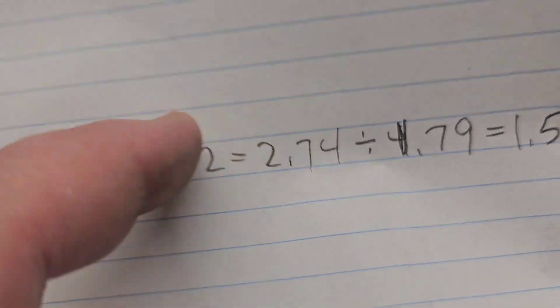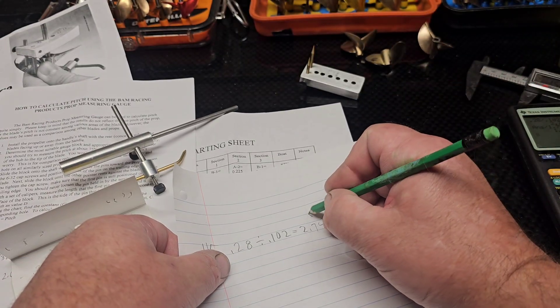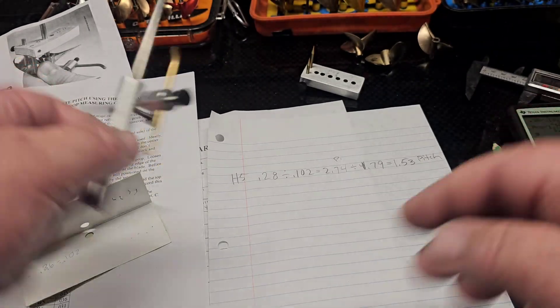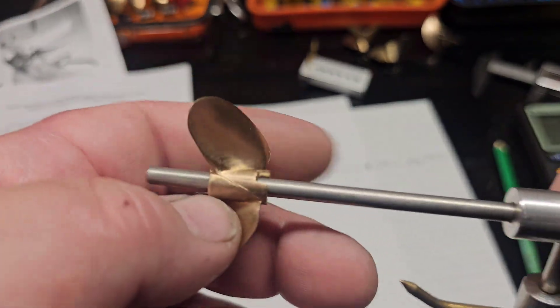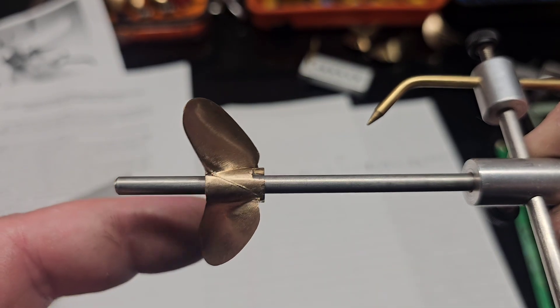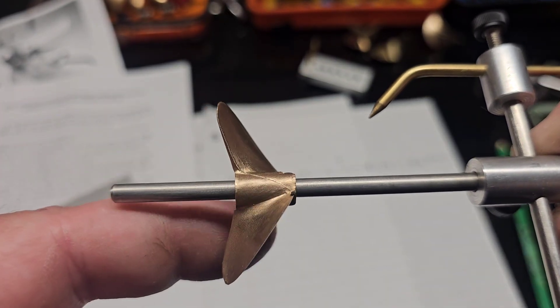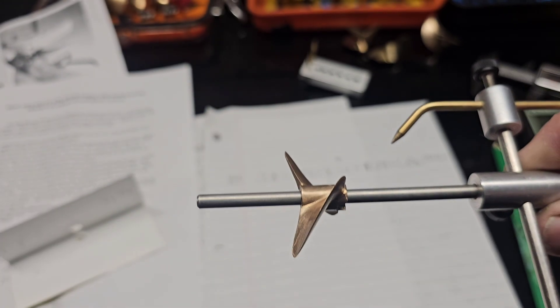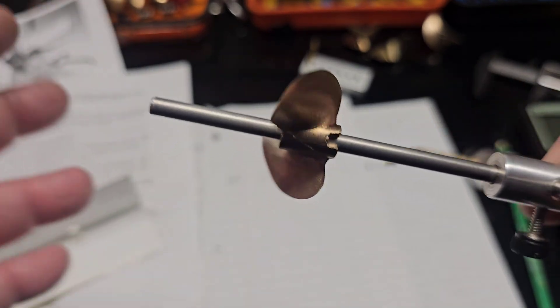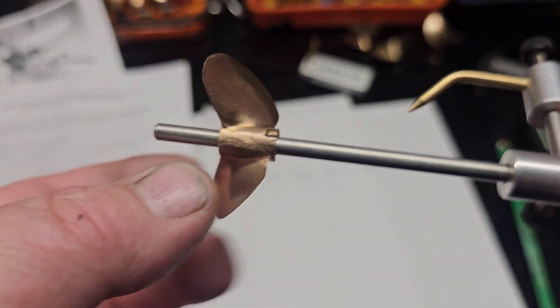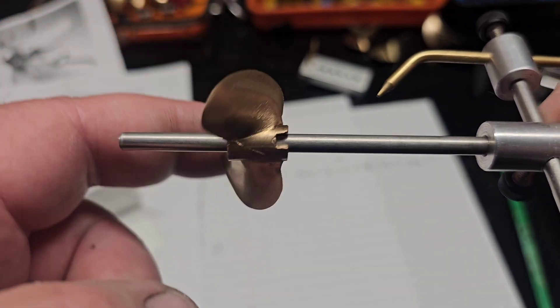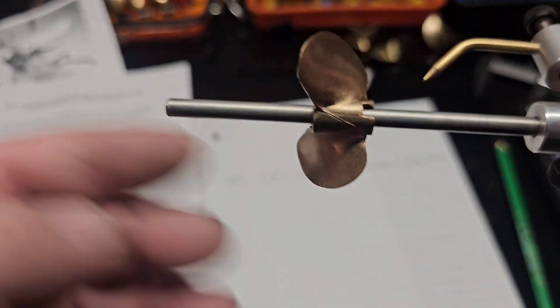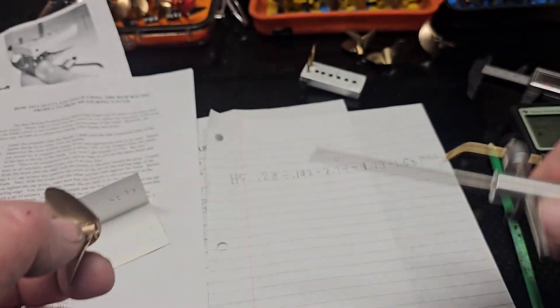So this first pitch is inches traveled in a perfect world. So this propeller, in a perfect world, no slip, would travel 2.74 inches for every full revolution of the propeller in a perfect world. 1.5 pitch, 1.5 pitch, travels 2.74 inches, would propel the boat 2.74 inches per RPM, no slip, perfect world.